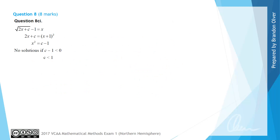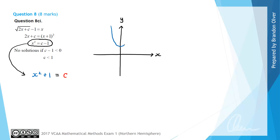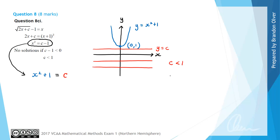The examiner's report took a slightly different approach. They arrived at x² equals c minus 1, which rearranges to x² plus 1 equals c. From a graphical perspective, y equals x² plus 1 is a parabola with turning point at (0, 1). The horizontal line y equals c has no intersection with that parabola when c is less than 1, confirming no solutions to the equation.